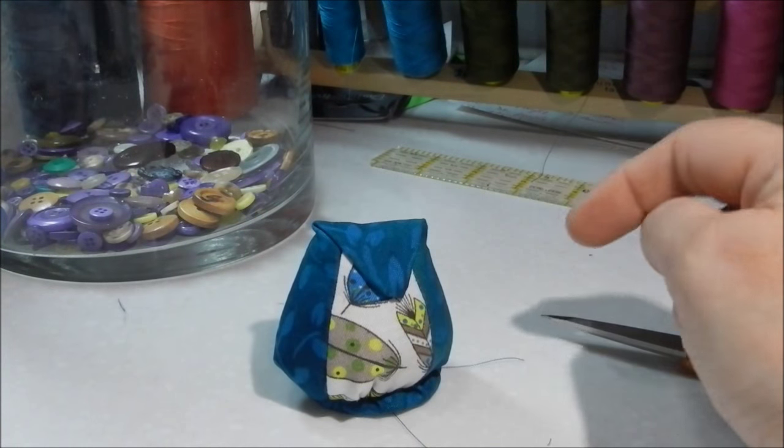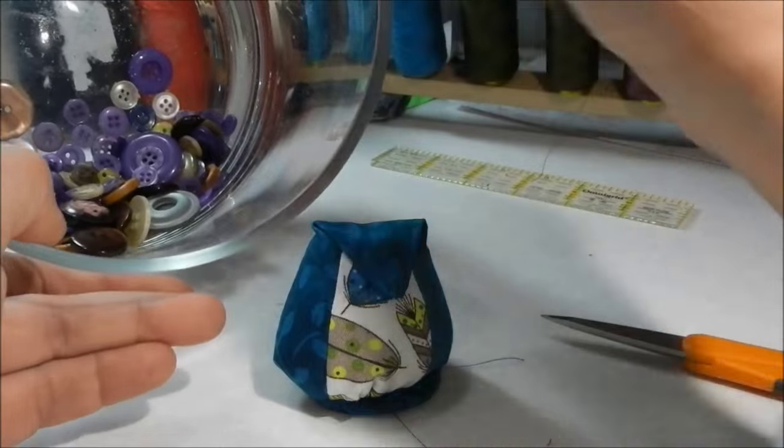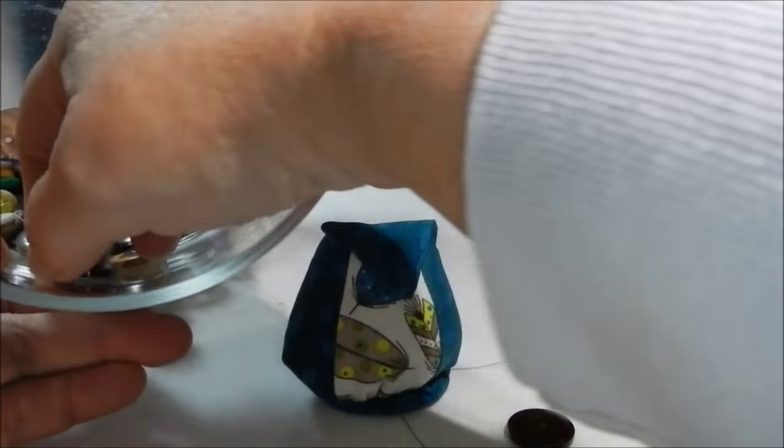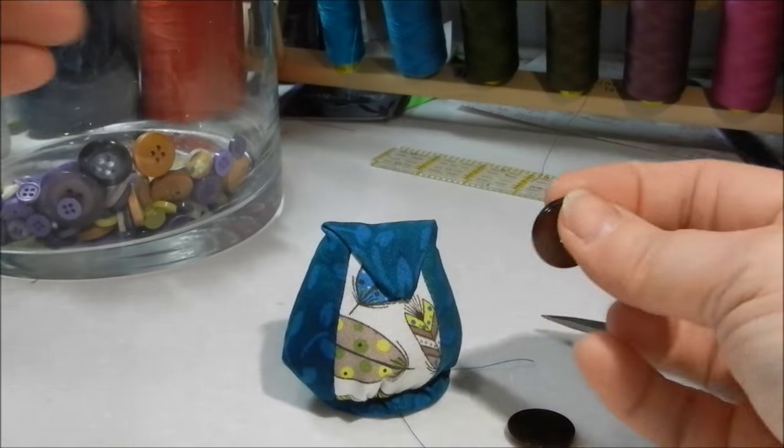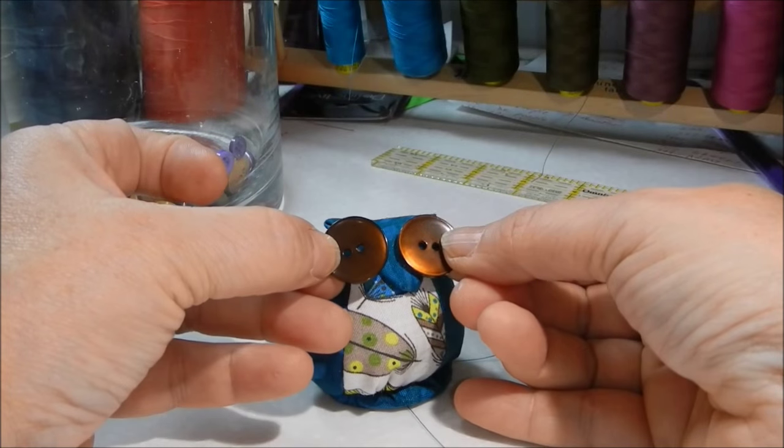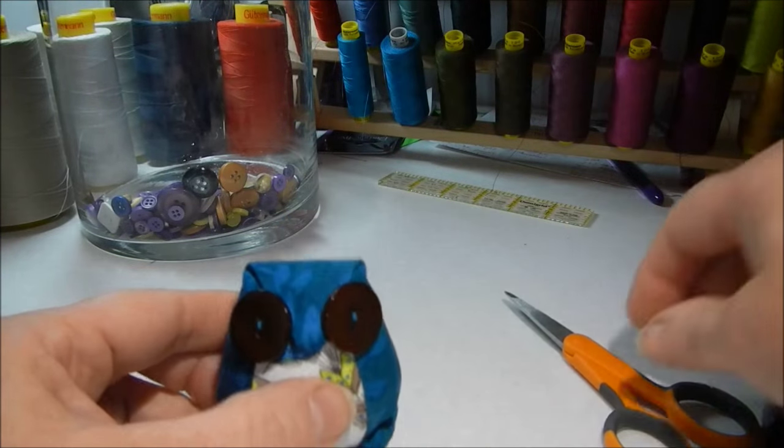Now all I need is sew on a couple buttons. I think I'm going to go with maybe brown. I have a couple of brown in here. I'll sew a couple buttons on, and he's done. So there it is, my little owl pincushion.